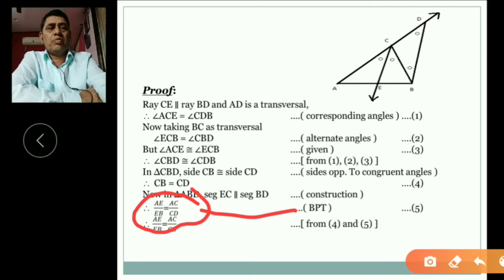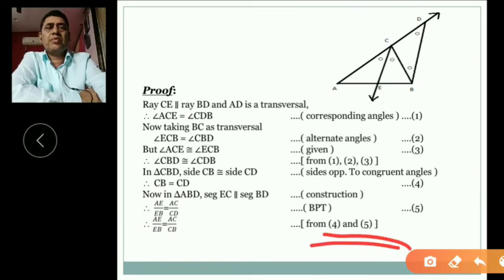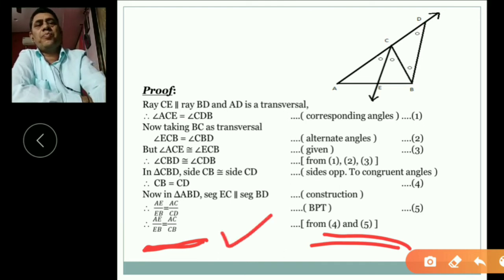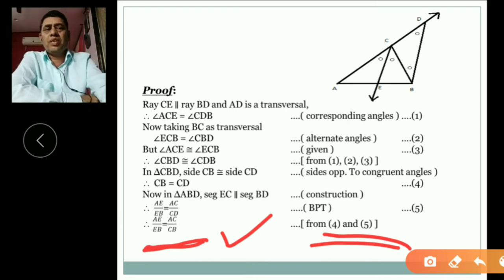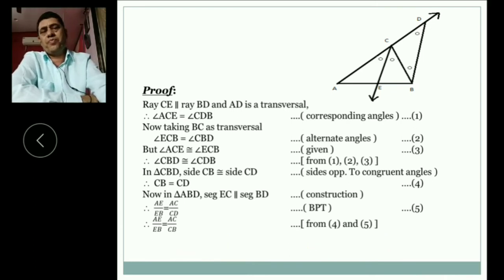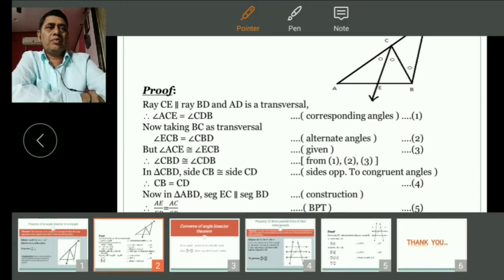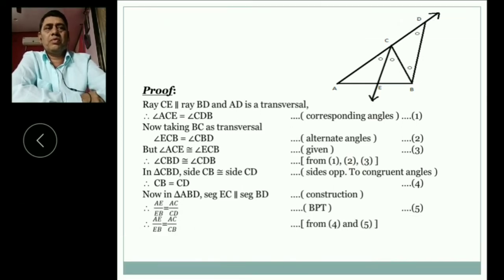And by BPT what we write: AE upon EB is equal to AC upon CD by BPT. Now from equation first, fourth, and fifth, we easily write that we replace CD to CB. Means AE upon EB is equal to AC upon CB. Hence proved. In this way we prove this theorem easily.